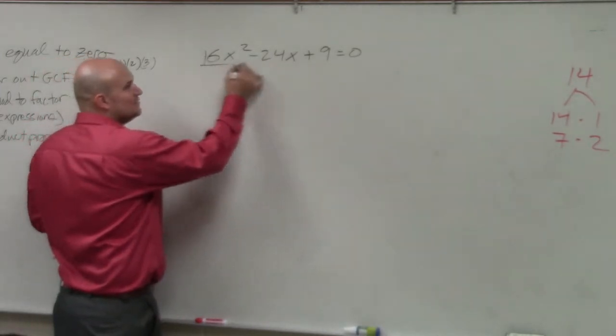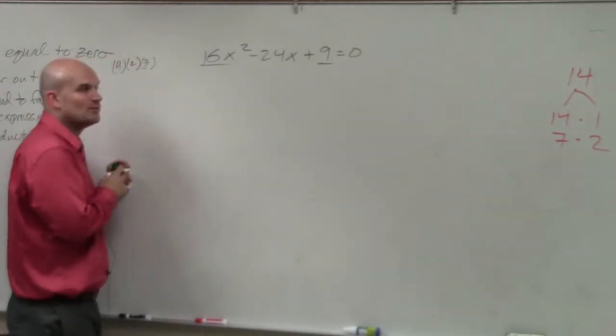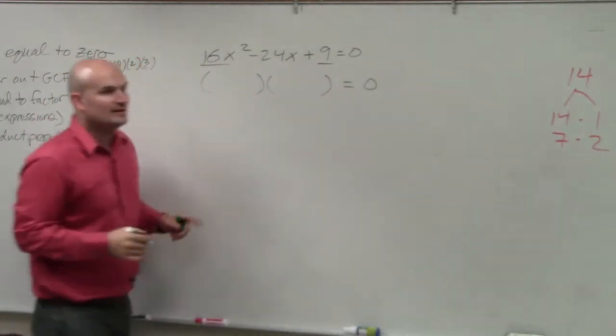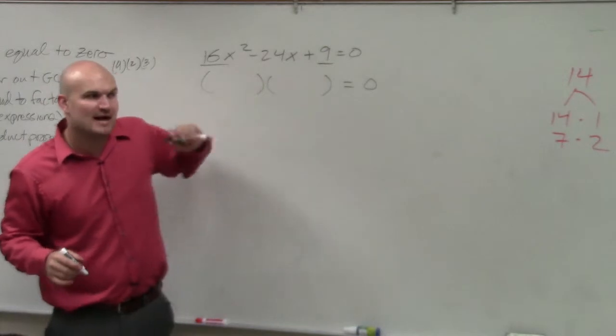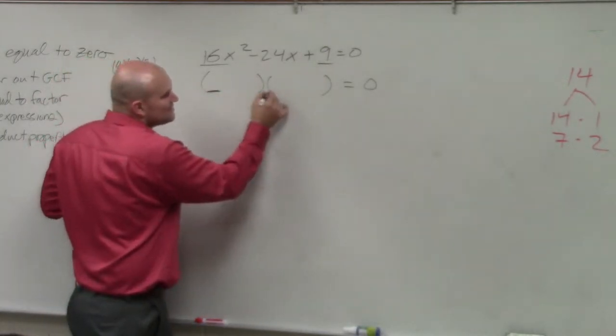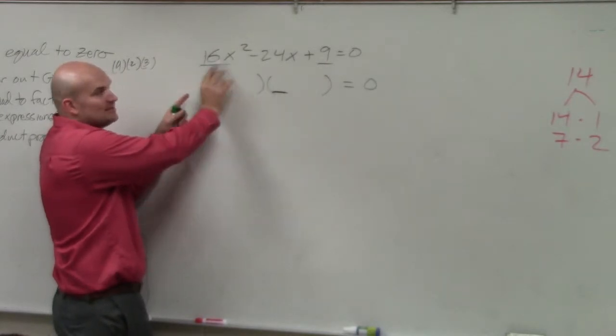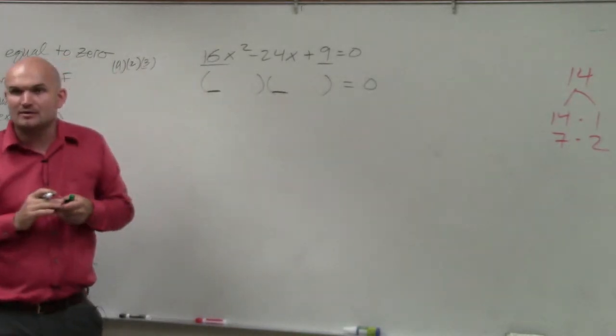So if you look at this and you notice that you have square terms and square terms, remember what the factoring looks like. It's binomial times a binomial. So let's look at these first two terms. What two numbers, if these are square, what two numbers that are exactly the same could multiply to give me 16x squared?